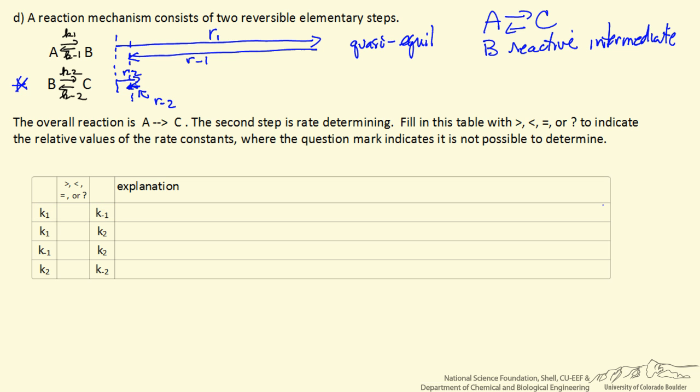Well the first step is close to equilibrium, meaning that K1 concentration of A, remember these are elementary steps, is approximately equal to K minus 1 concentration of B. But the concentration of A is much greater than the concentration of B, because B is this reactive intermediate. So if the concentration of A is greater than B, K1 must be much smaller than K minus 1 for this equality to hold.